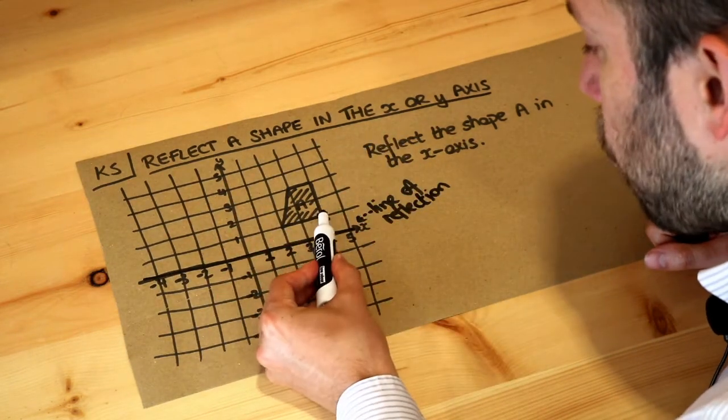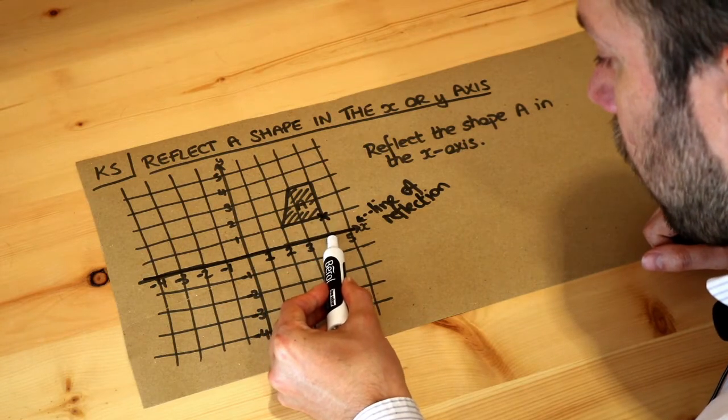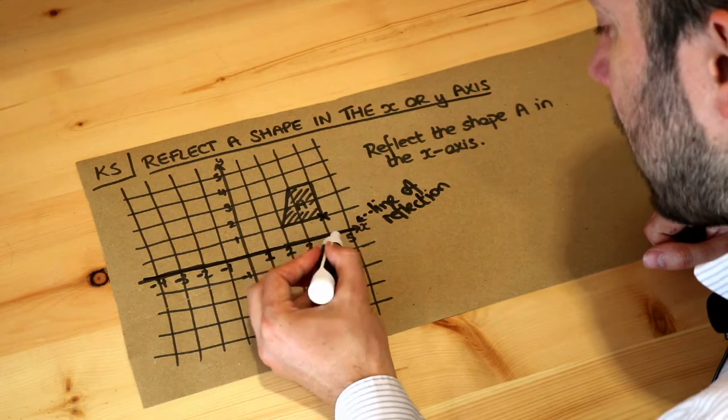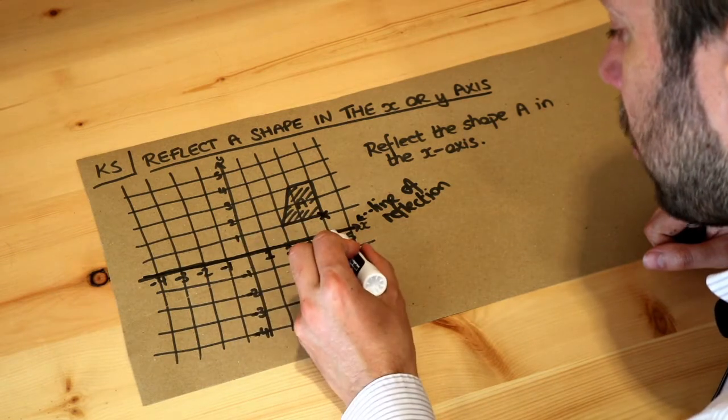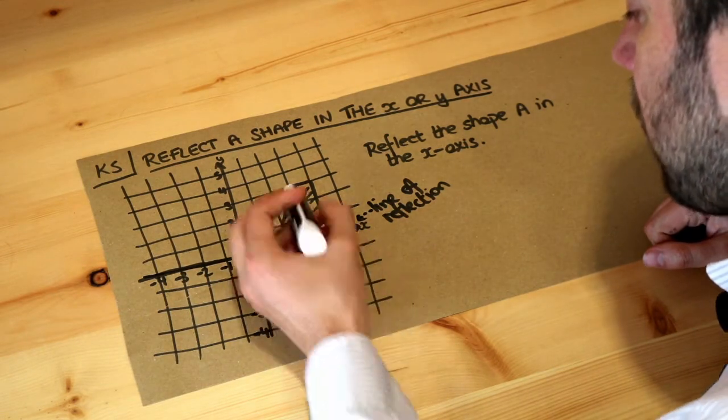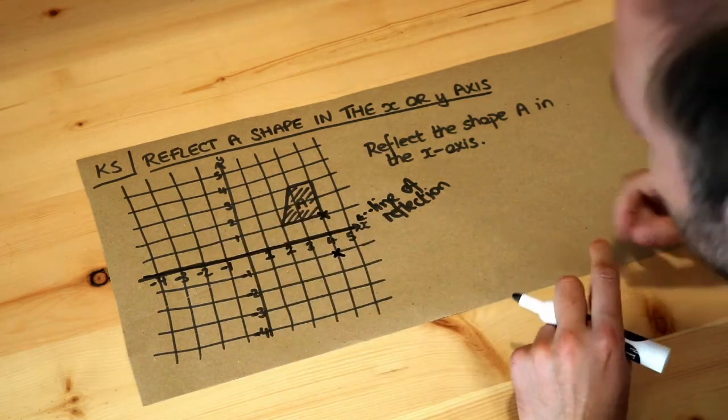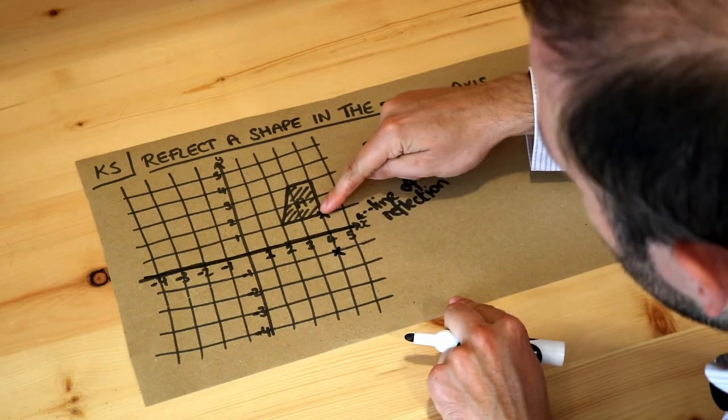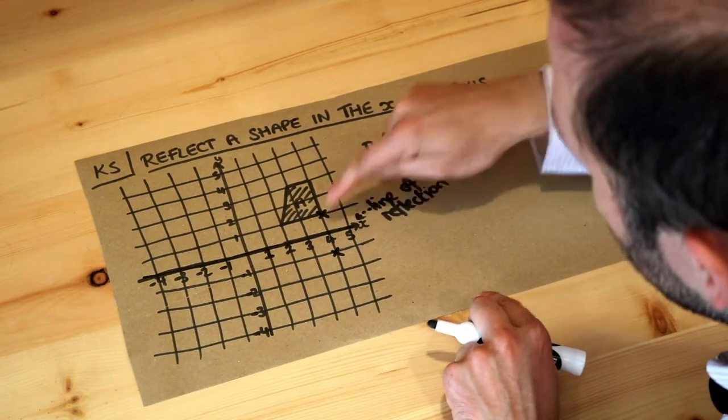So we go directly towards that line. So we go one square down and we can see we're now on this line of reflection. And then we do the same again. So go one square again and we'll end up here. So this point reflects to this point in this line.